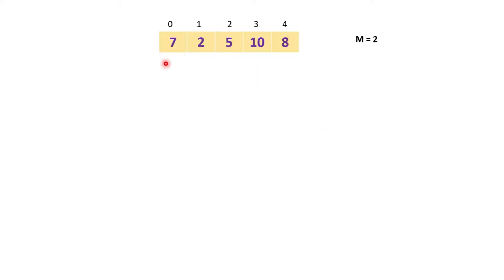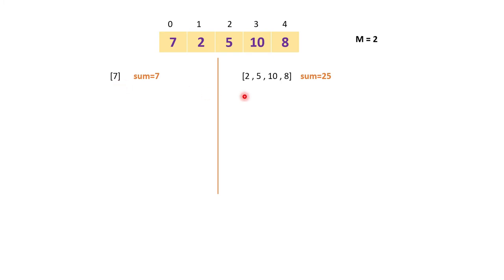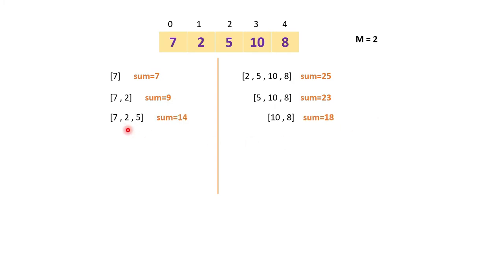Now let's take this example with array [7, 2, 5, 10, 8] and m equal to 2. We have to divide it into 2 sub-arrays. The possible splits are: [7] and [2, 5, 10, 8] with sums 7 and 25; [7, 2] and [5, 10, 8]; [7, 2, 5] and [10, 8] with sums 14 and 18; and [7, 2, 5, 10] and [8].